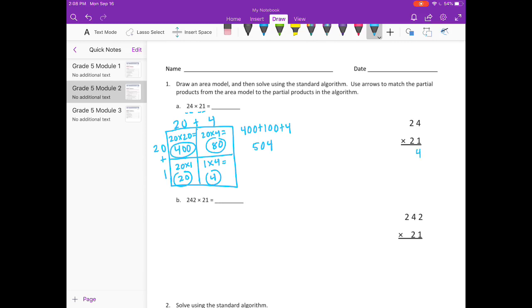So we have 1 times 4 is 4 and 1 times 2 is 2. So there's 24 which matches right there. There's our 24. Remember it told us to draw arrows.